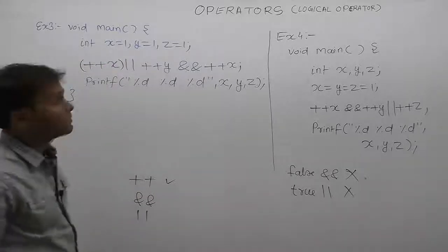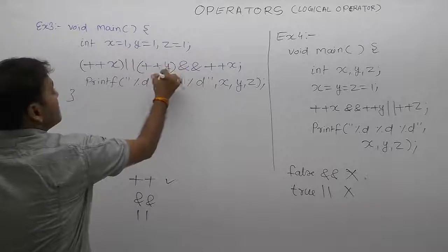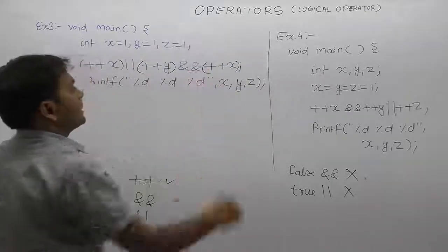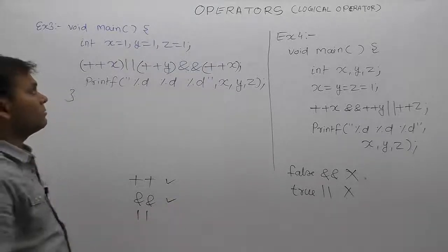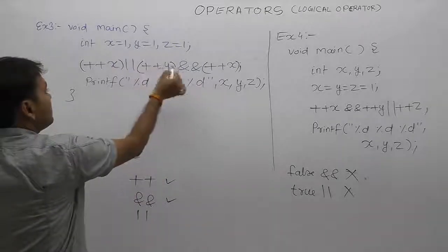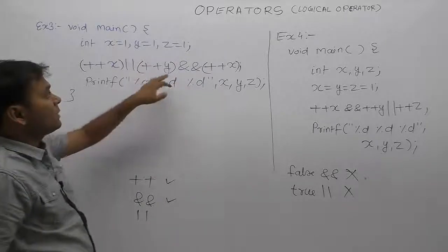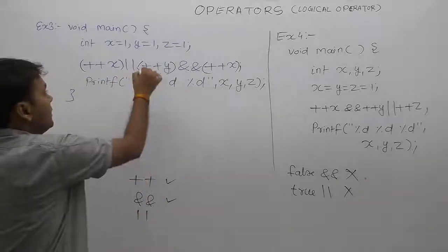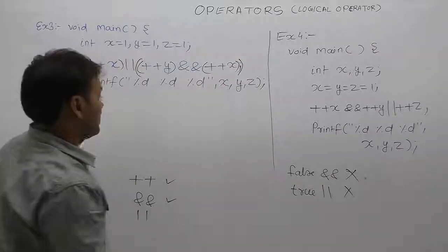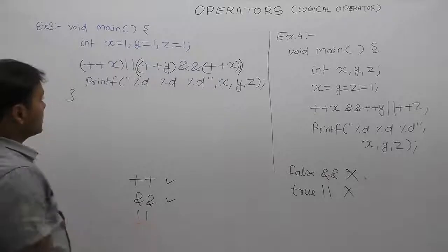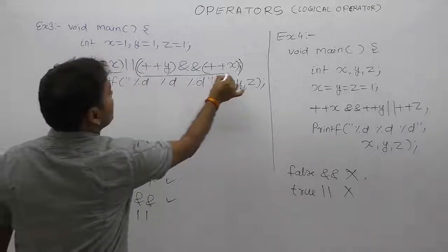The first operand for the first plus-plus is only x. Then plus-plus y, and plus-plus x again. For the second case, applying parentheses — what is the first operand for logical AND? For any operator, the operand part is considered up to the least priority, until highest priority operators are found. This is the first operand for logical AND and this is the second operand for logical AND. The main part becomes the first operand for OR, and the logical AND expression becomes the second part for logical OR.